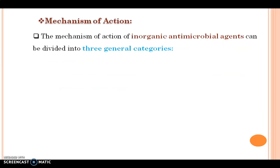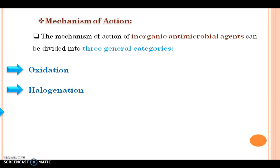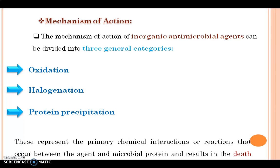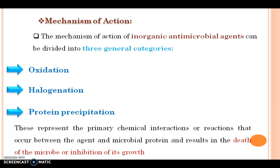Next is about mechanism of action. The mechanism of action of inorganic antimicrobial agents can be divided into three general categories: oxidation, halogenation, and protein precipitation. These represent the primary chemical interactions or reactions that occur between the agent and microbial protein, resulting in the death of the microbe or inhibition of its growth. The inorganic compound reacts with the protein of microorganisms, causing death or inhibition of growth.